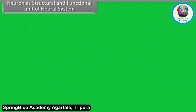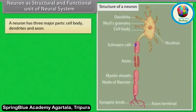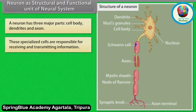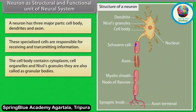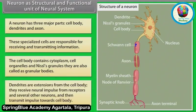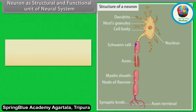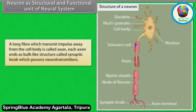A neuron has three major parts: cell body, dendrites, and axon. These specialized cells are responsible for receiving and transmitting information. The cell body contains cytoplasm, cell organelles, and Nissl's granules, also called granular bodies. Dendrites are extensions from the cell body that receive neural impulses from receptors and other neurons and transmit impulses towards the cell body.